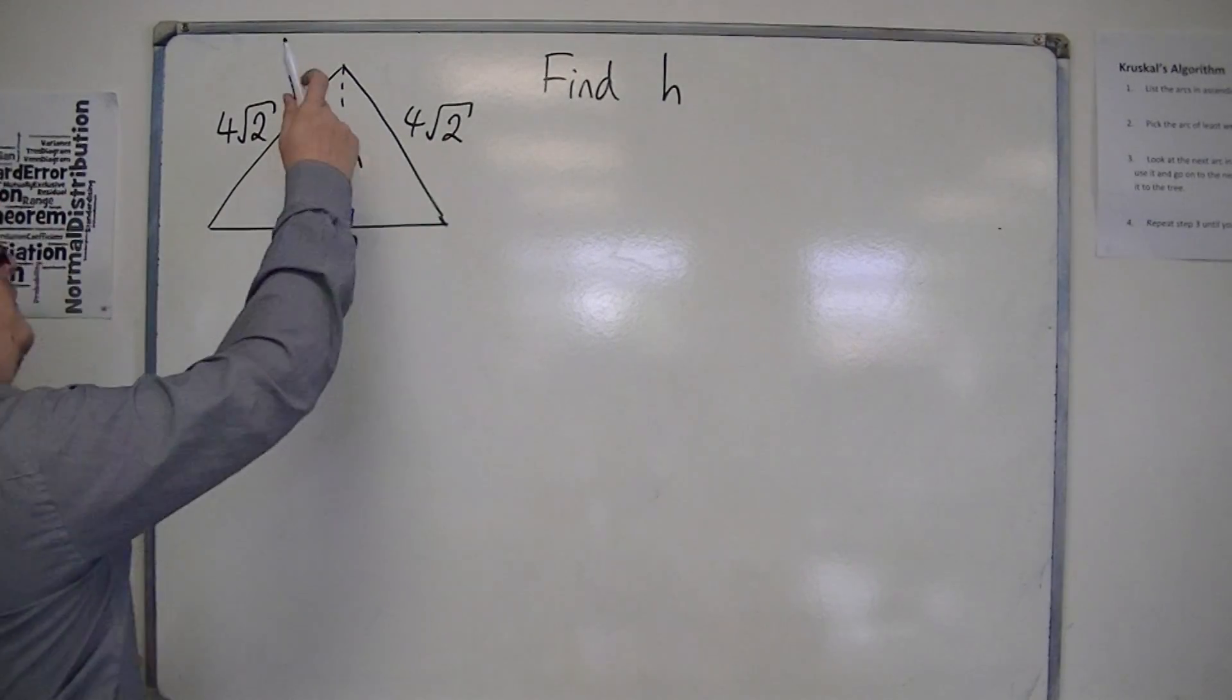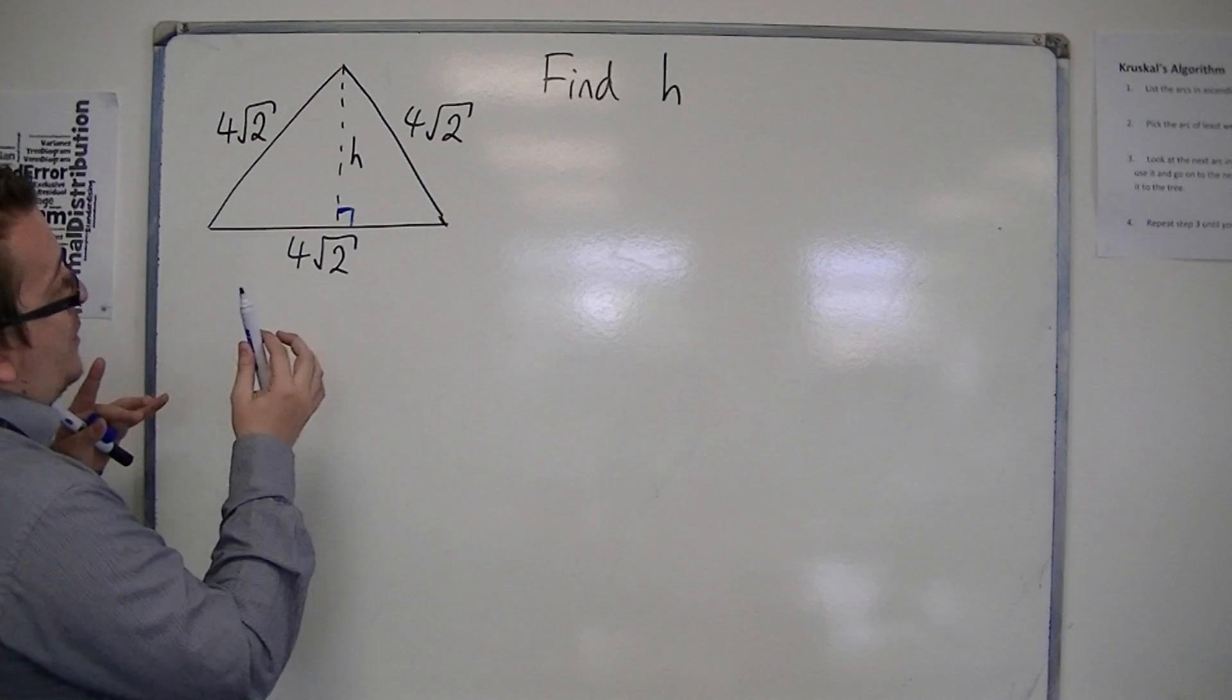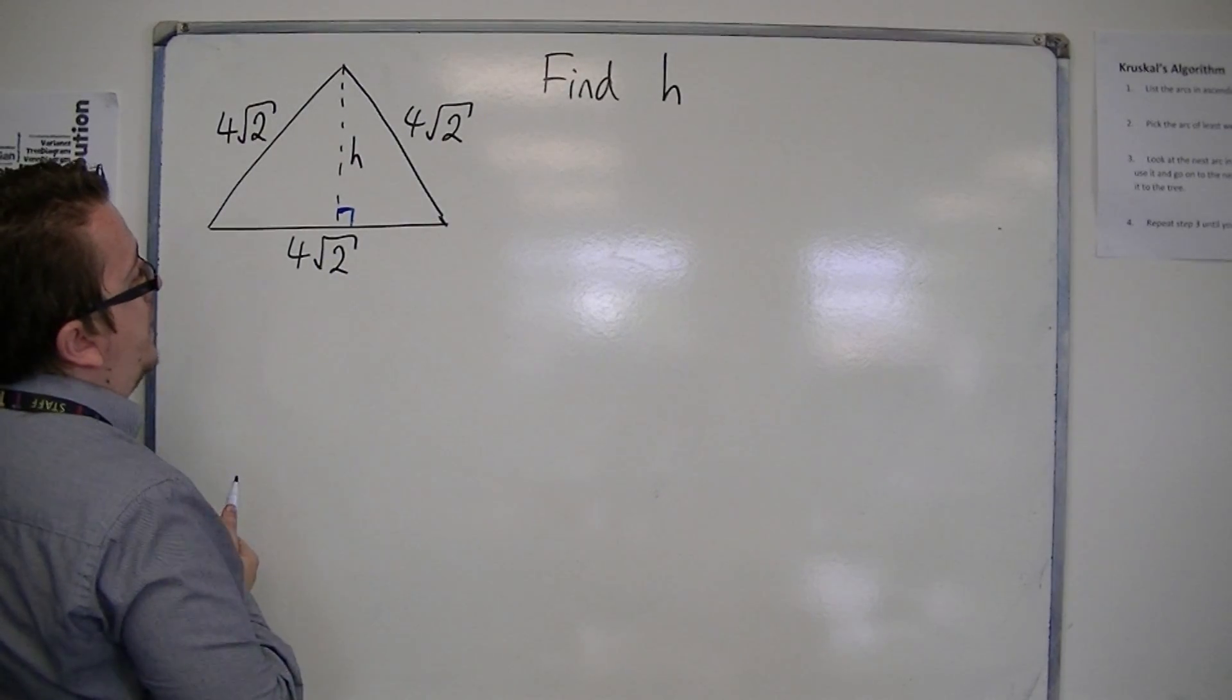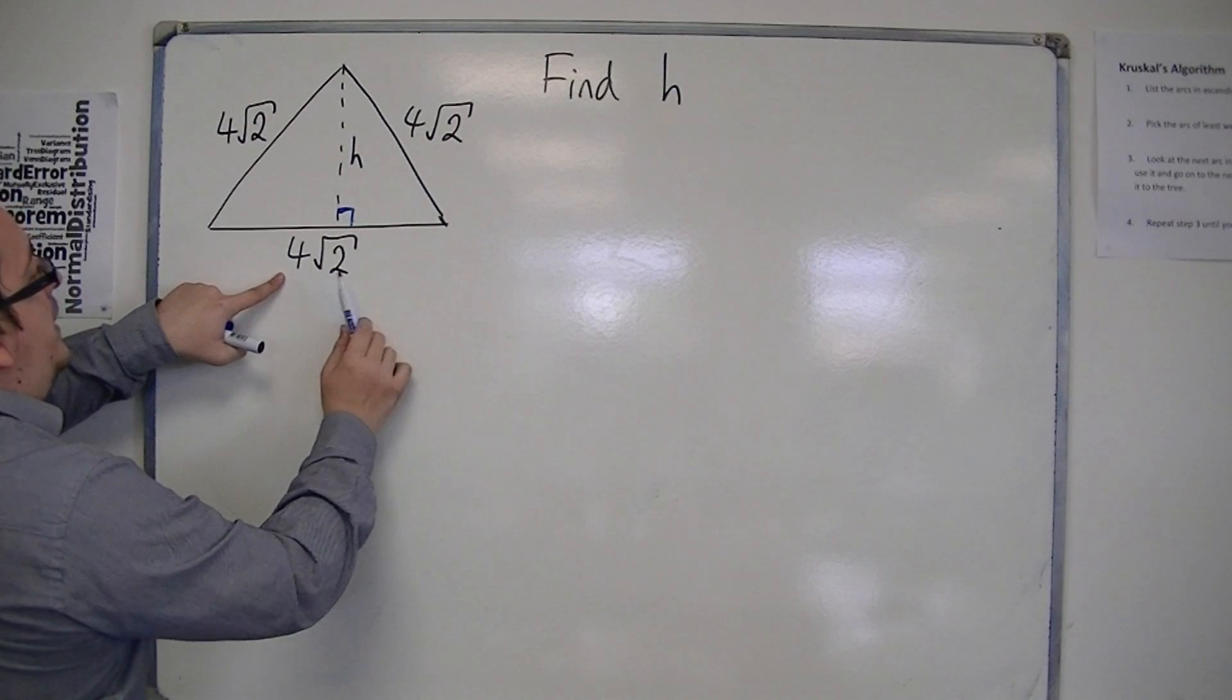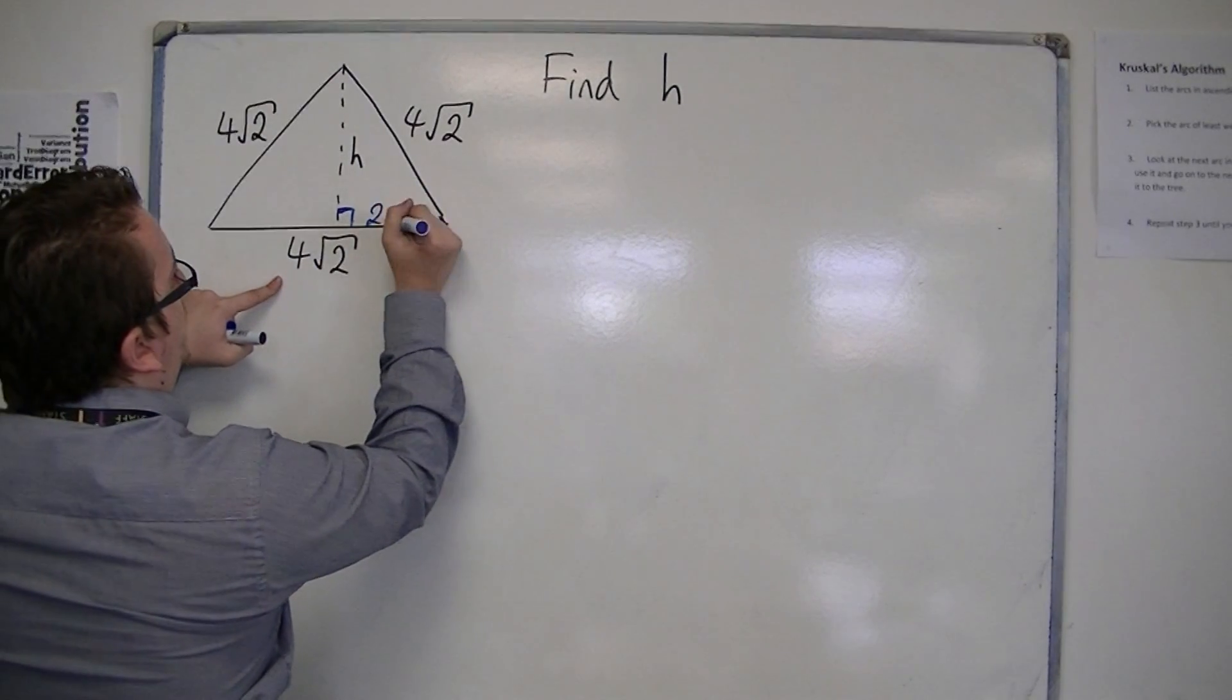Then we have a hypotenuse of 4 root 2, and then we're going to have a base of the triangle here. It's going to be half of the length of the overall base. So half of 4 root 2 is 2 root 2.